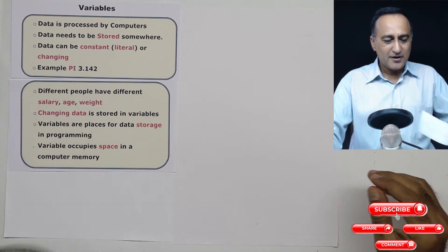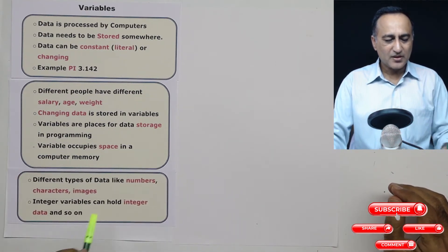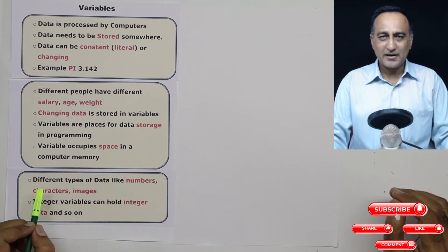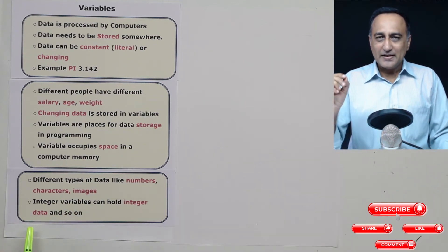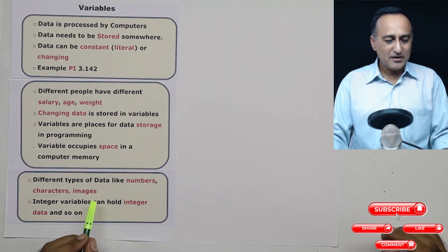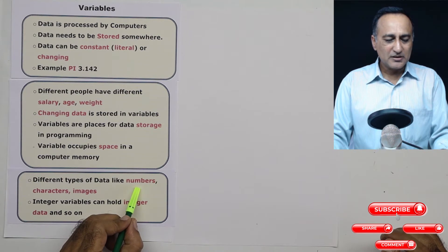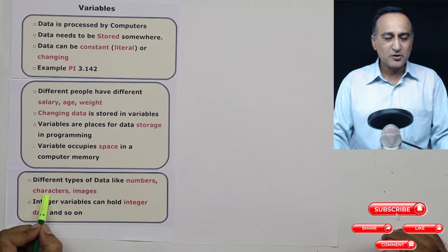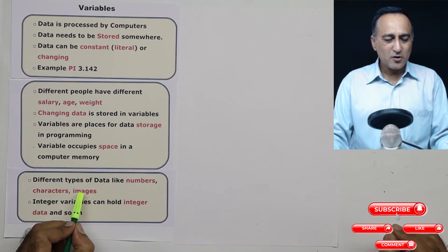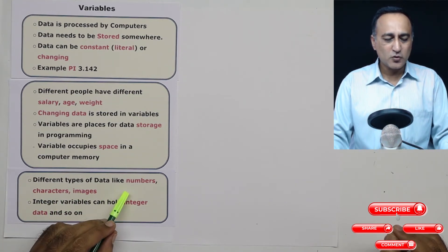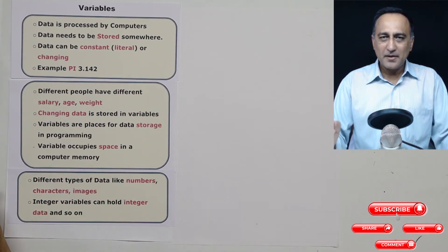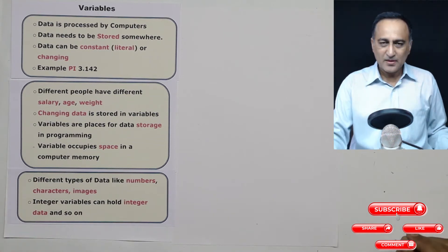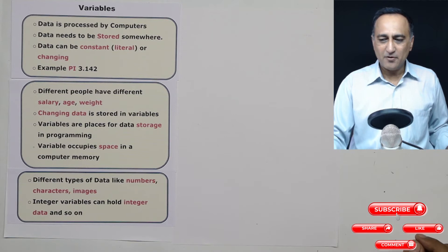Now we have different types of data. We have data like numbers, characters, images, sound files, etc. So different data types are required to hold this. For example, a memory location which can hold numbers doesn't make sense to assign it characters because it will be meaningless. Similarly, a memory location which is reserved for an image cannot hold numbers. So integer type of variables are meant to hold integer type of data, character type of variables can hold character type of data.